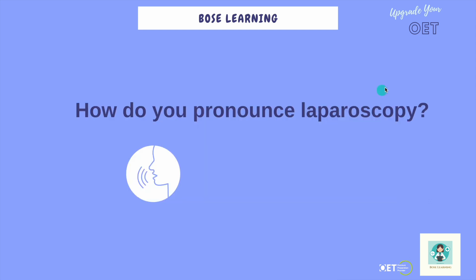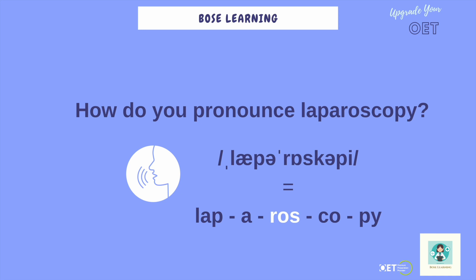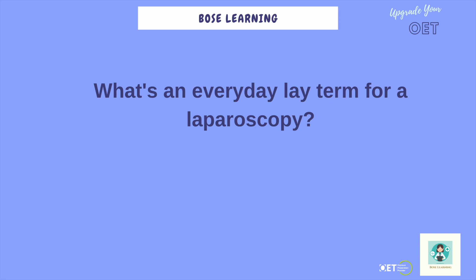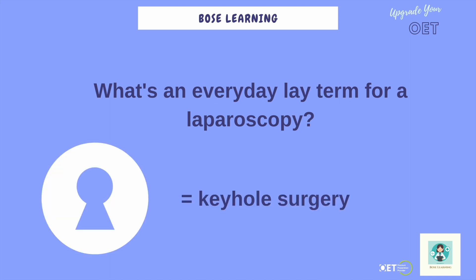First things first though — how do you pronounce this word? This is how we pronounce it in the UK: laparoscopy. The stress is on the 'o': laparoscopy. And of course that's a very technical word — nothing wrong with using technical or medical words, as long as you're explaining it in everyday English. So what's an everyday lay term for a laparoscopy? In everyday English we call it keyhole surgery, because it's like inserting a key into a keyhole when you put in the tubes, the instruments, the laparoscope. So we call it keyhole surgery, or minimally invasive surgery, but the everyday lay term is keyhole surgery.